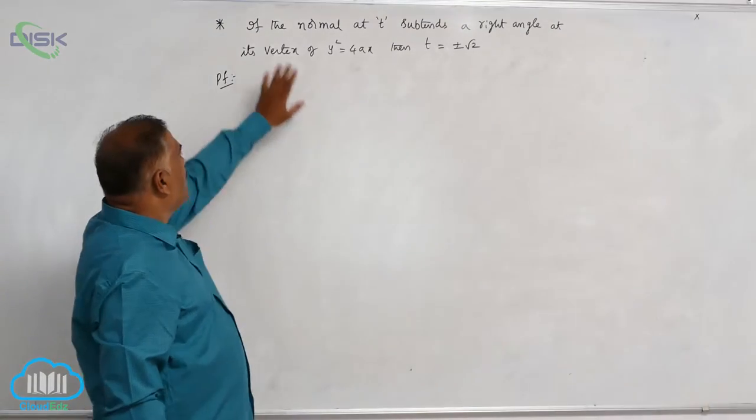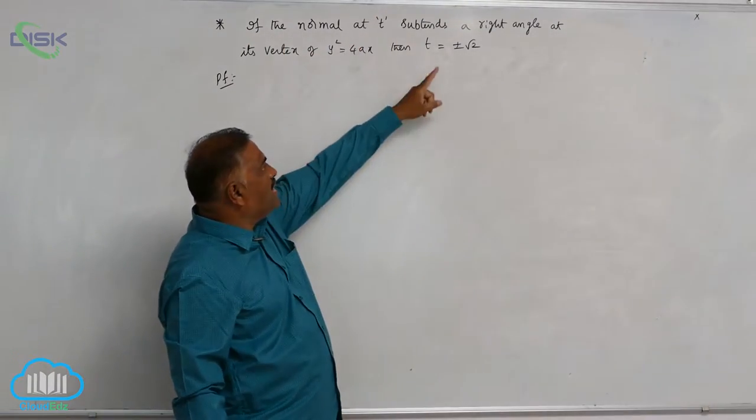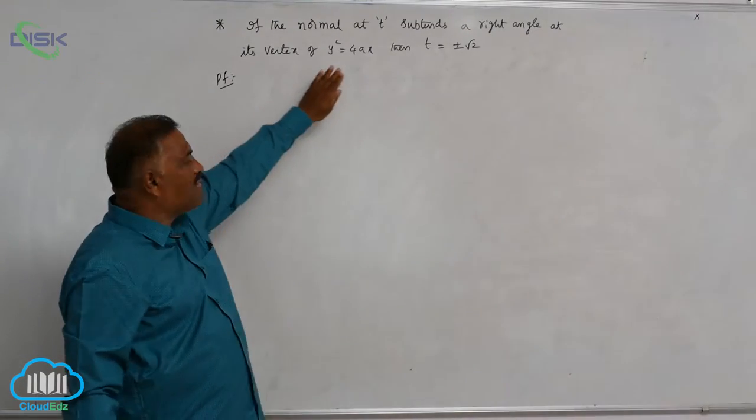We will discuss one more important result. The normal at the point t subtends a right angle at its vertex of the parabola.